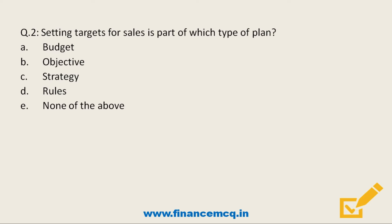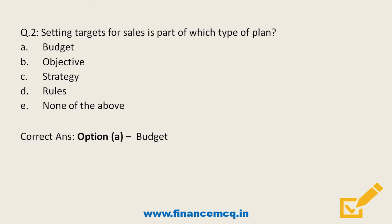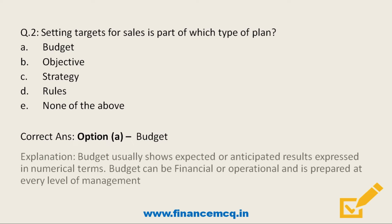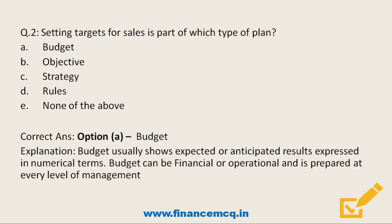Next question: setting targets for sales is a part of which type of plan? Option A: budget. Option B: objective. Option C: strategy. Option D: rules. Option E: none of the above. The correct answer is Option A — budget. A budget usually shows expected or anticipated results, is expressed in numerical terms, can be financial and operational, and is prepared at every level of management.